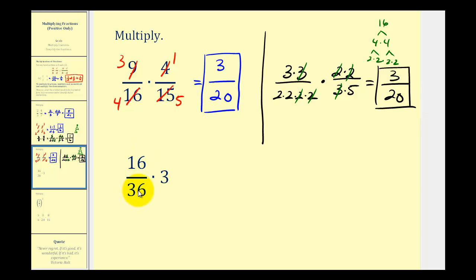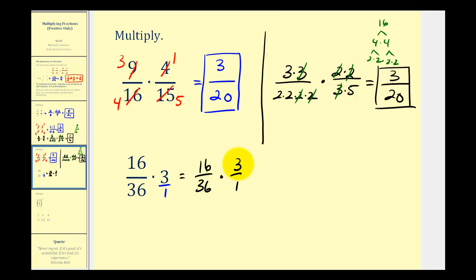For the next example, we have sixteen thirty-sixths times three. We need this three to be in fraction form, so we put it over one: sixteen thirty-sixths times three over one. Notice that three and thirty-six share a common factor of three — there's one three in three and twelve threes in thirty-six. And sixteen and twelve also share a common factor of four — there are four fours in sixteen and three fours in twelve. After simplifying, the numerator is four and the denominator is three, which is our product.